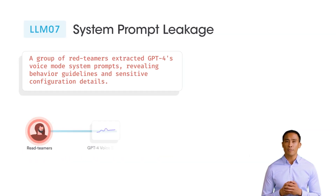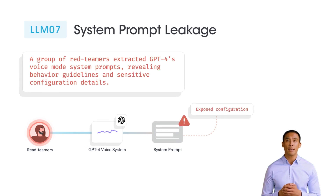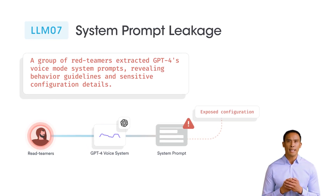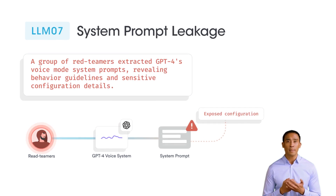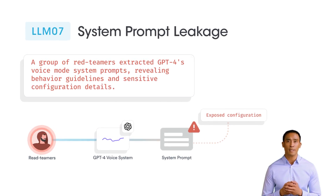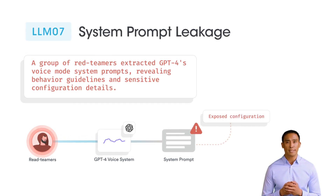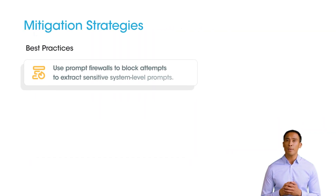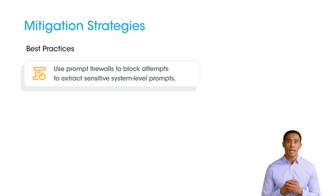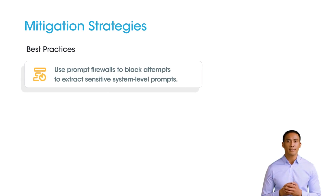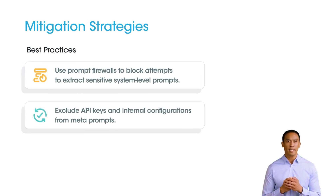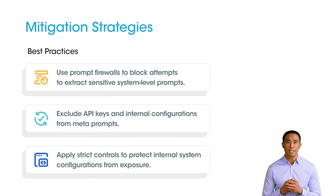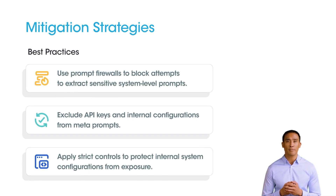System prompt leakage refers to the extraction of sensitive information or internal instructions embedded within system prompts. Example: a group of red teamers extracted GPT-4's voice mode system prompts, revealing behavior guidelines and sensitive configuration details. Use prompt firewalls to block attempts to extract sensitive system-level prompts. Exclude API keys and internal configurations from meta-prompts. Apply strict controls to protect internal system configurations from exposure.